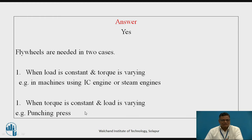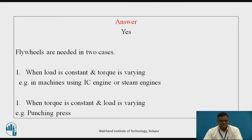Secondly, in the case of a punching press with an electric motor providing constant torque throughout the cycle, the load varies. When the ram moves from top down to touch the sheet metal, the load is very less. During the punching operation the load is very high, and when the ram moves vertically upwards to the original position, the load is very less again. So in the punching press, the torque is constant but the load is varying. Either when the load is varying or the torque is varying, we are in need of the flywheel to reduce the fluctuation in speed.